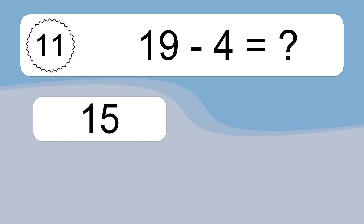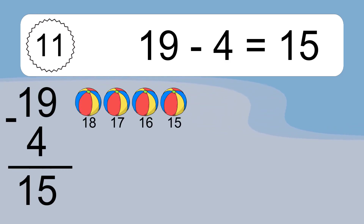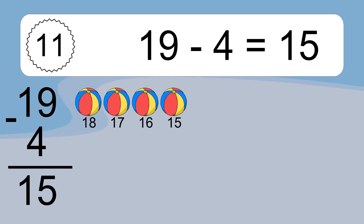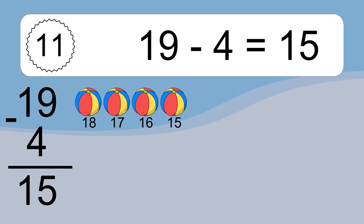19 minus 4 equals what? 19 minus 4 equals 15. Let's count it: 18, 17, 16, 15.